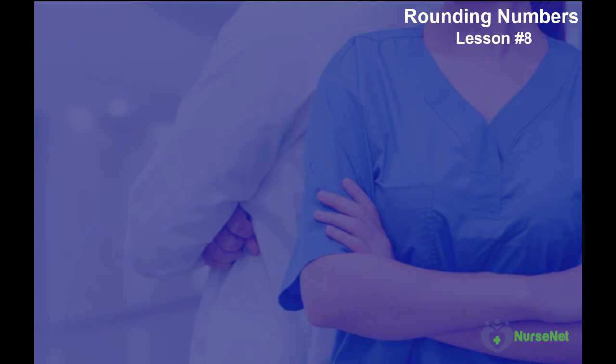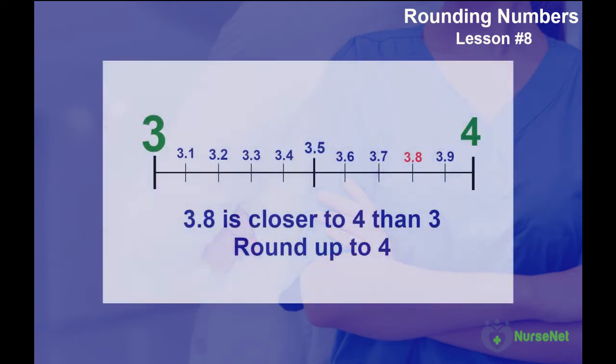So let's do a quick check. If we want to round 3.8 to the nearest whole number, we would round up to 4, since the 8 in our tenth column is closer to the 4 than it is to the 3.